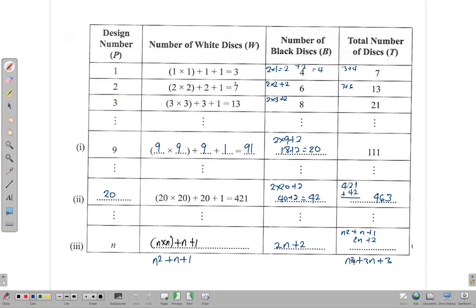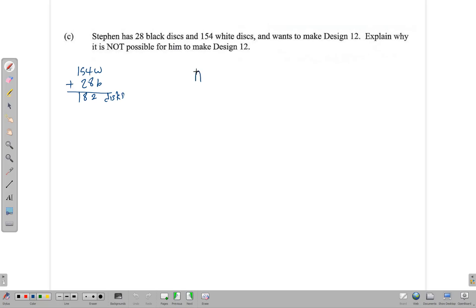By what we have learned, the generalization is n square plus 3n plus 3 for the total number of discs. He wants to make pattern 12. So that would be 12 square plus 3 times 12 plus 3 which means 144 plus 36 plus 3. And if we add that up, we end up with 13 here. 6 plus 4, 10 plus 3, 13. Carried 1 there. That's 8 and 1. So this is telling us that he is short by one disc.